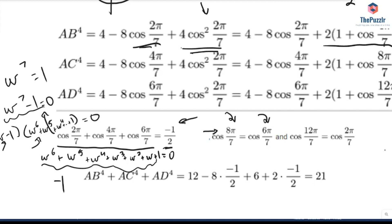use that to show why cosine 2π over 7, which is the squared, and then 4π over 7, which is this one, and 6π over 7 equals negative 1 over 2. And hint, you can use this right here to help you do that.